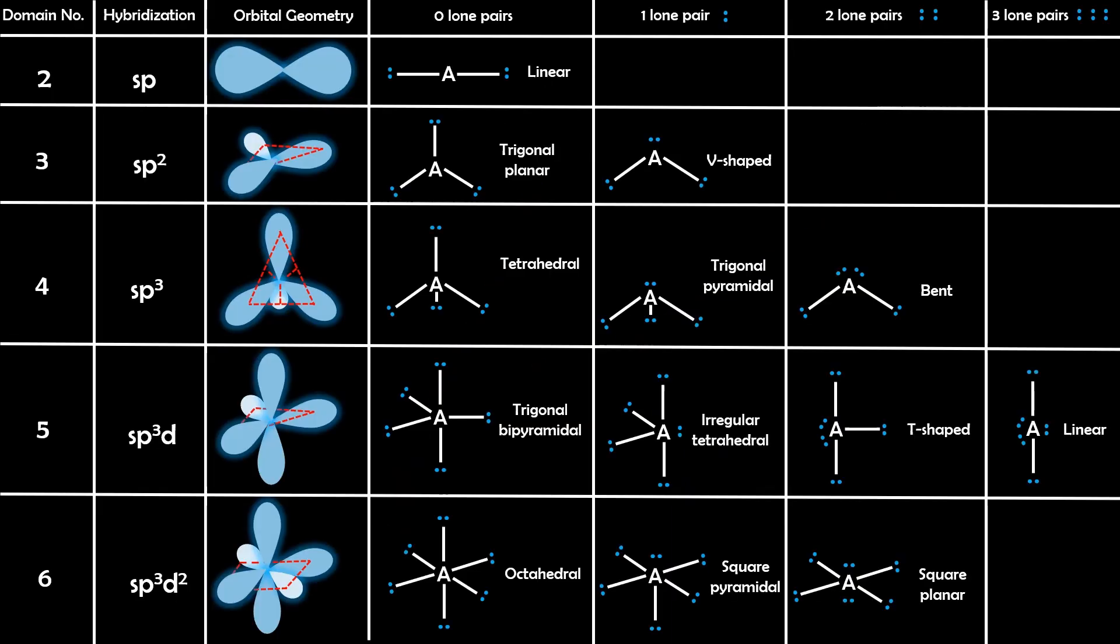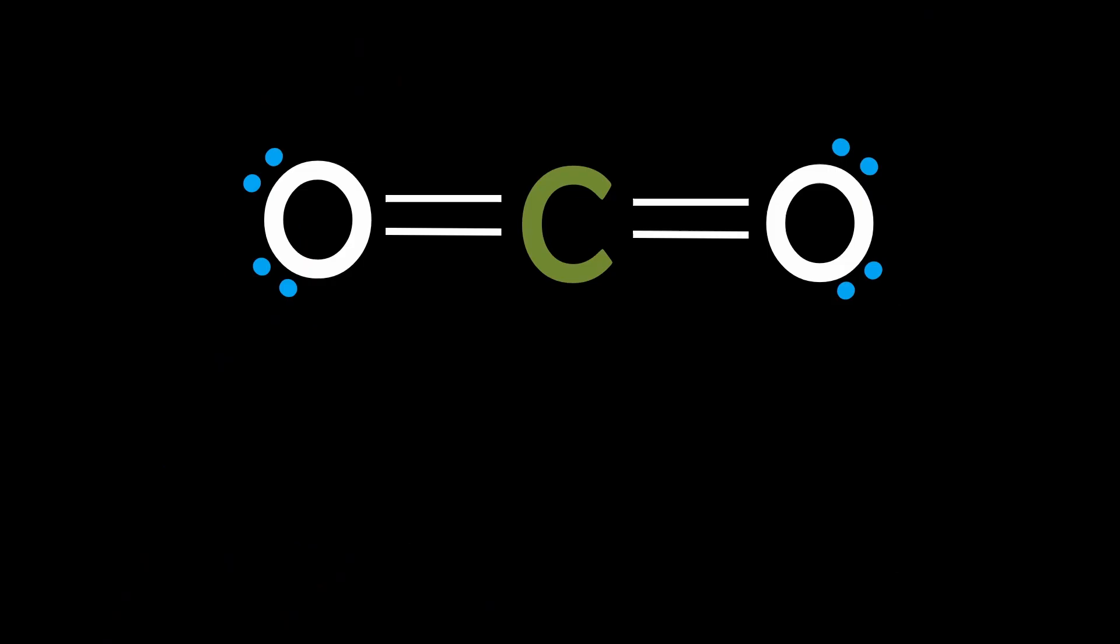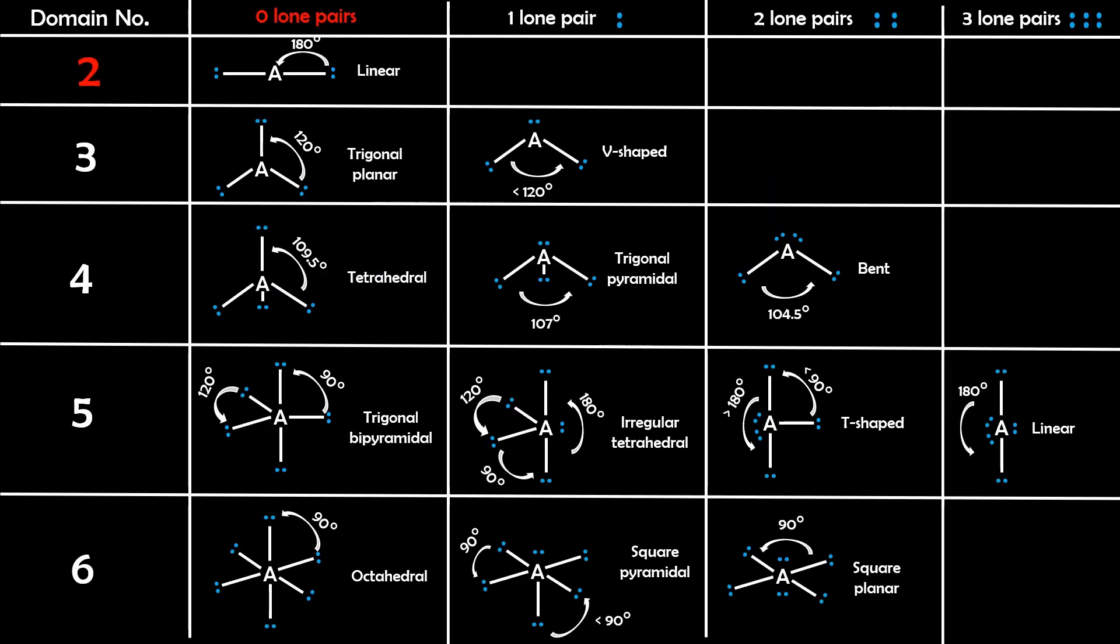In this video, however, I'll make it even simpler. While understanding the theory behind bonding and hybridization is important, you don't need to worry about all of that to determine the geometry of simple molecules. Instead, draw the Lewis structure and just count the number of electron domains and use the table I've provided to match the number to the geometry.